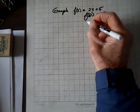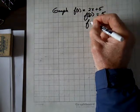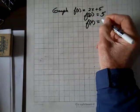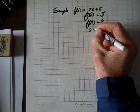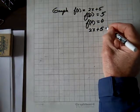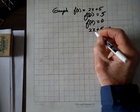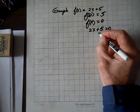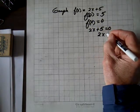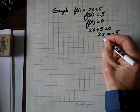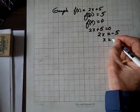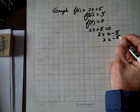Now to find the x-intercept, we set f(x) equal to 0. That means 2x + 5 = 0. So 2x, subtracting 5 from both sides, equals -5. And dividing both sides by 2, we get x = -5/2.